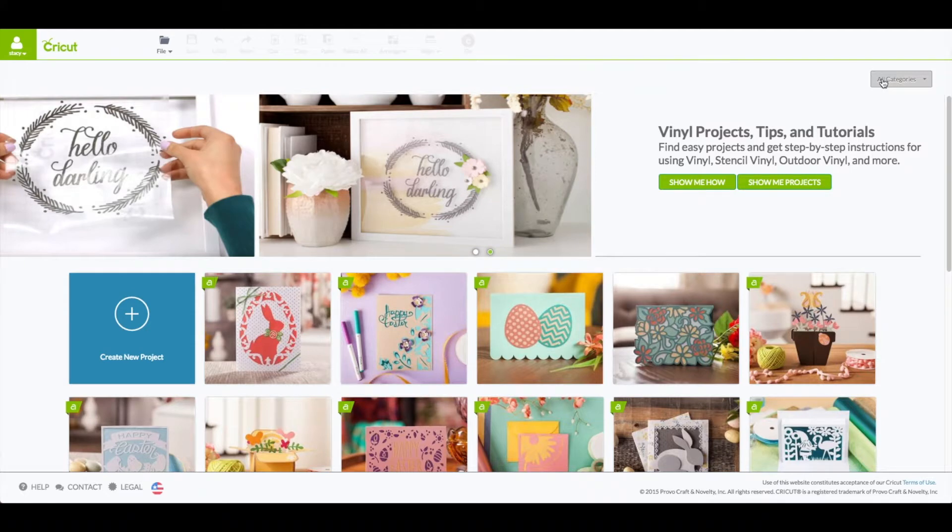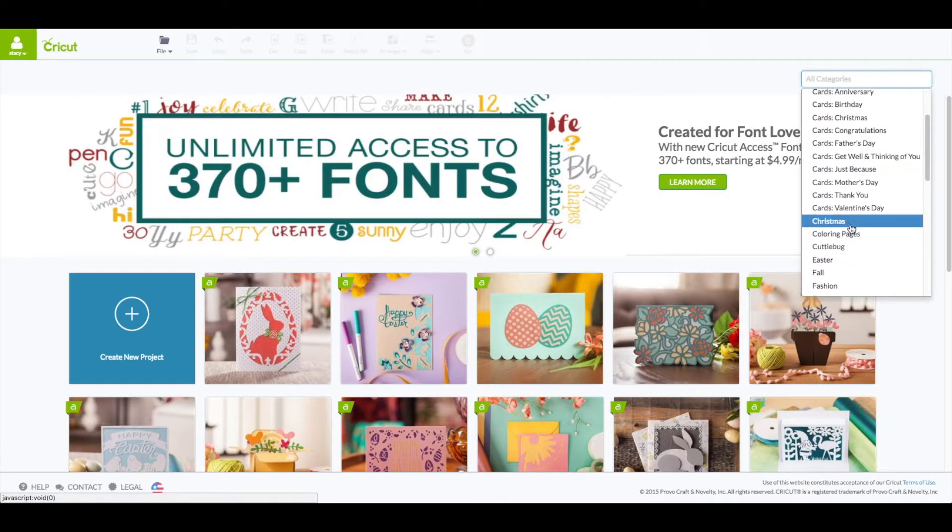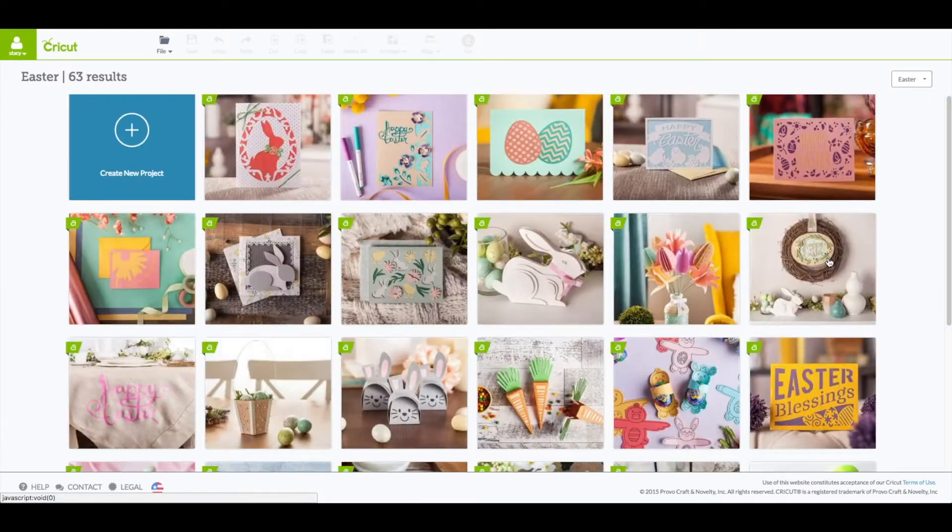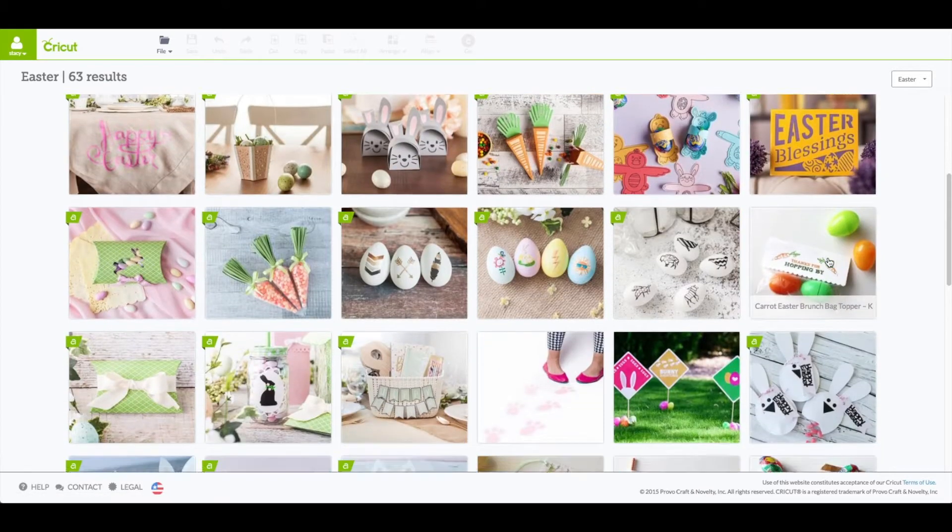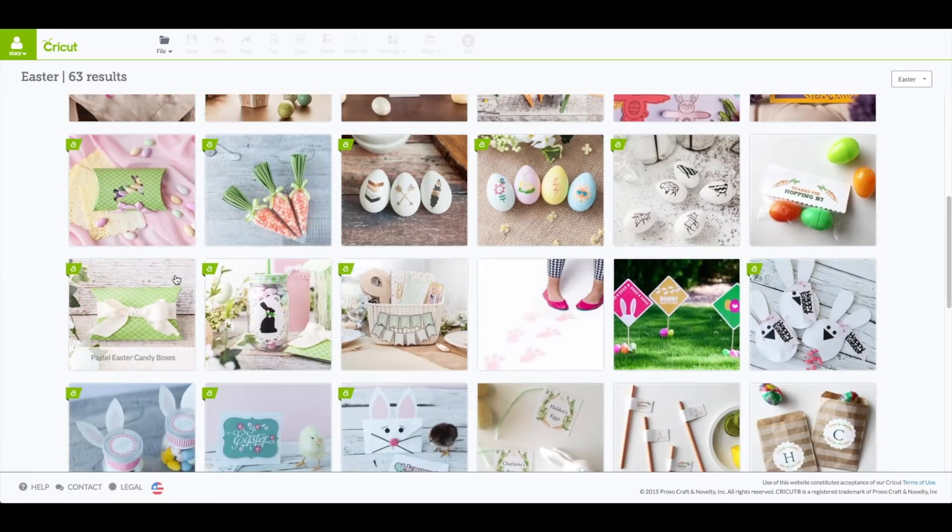You want to go to the right and click on where it says all categories and then go down and click on Easter. I'm going to scroll down to find the pillow box. You will see there are two of them. We are making the one that has the bunny on it, so go ahead and click on that.